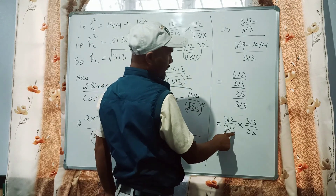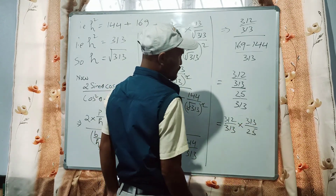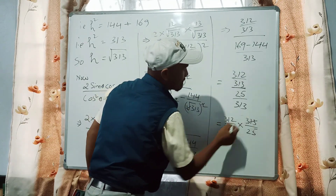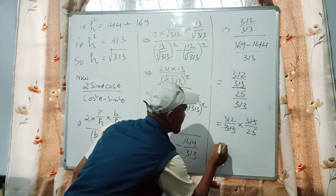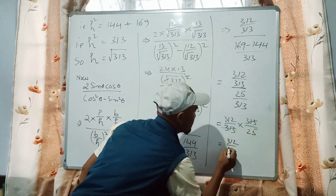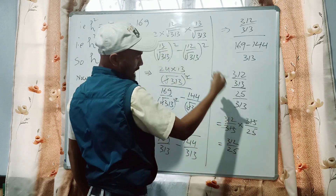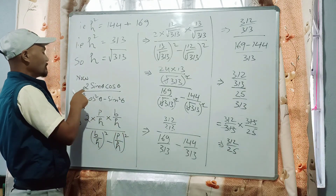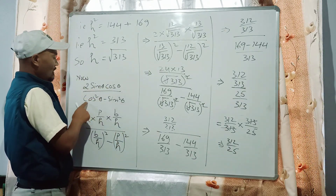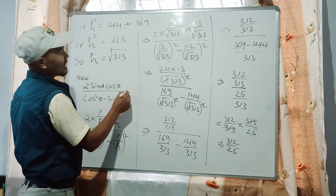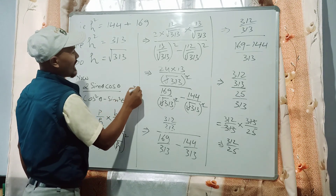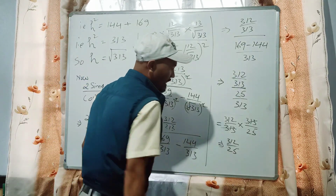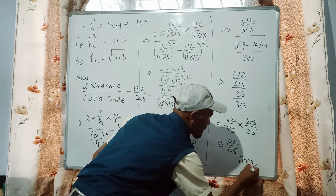In the numerator and denominator, we can cancel the common terms. And if we cancel them, then we will get 312 by 25. We will get the answer to prove that 2 sin theta cos theta divided by cos theta minus sin theta equals 312 by 25.